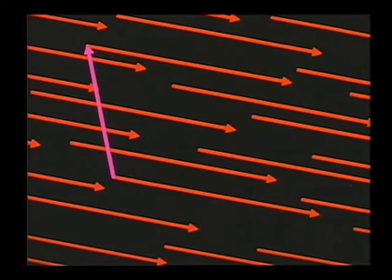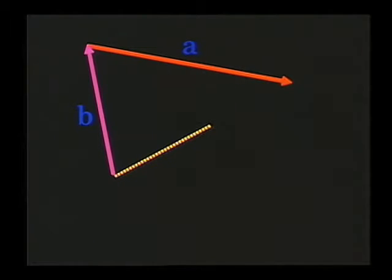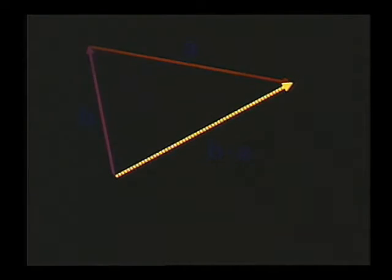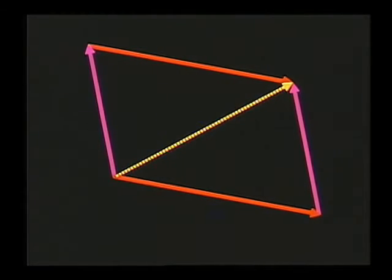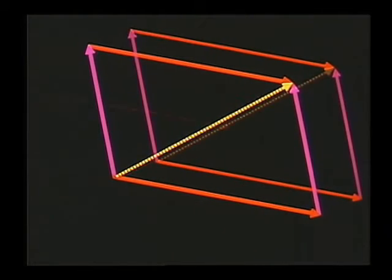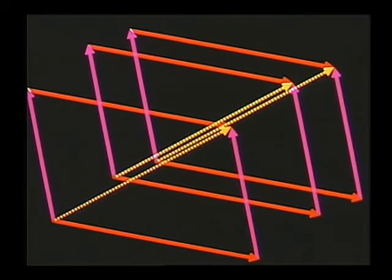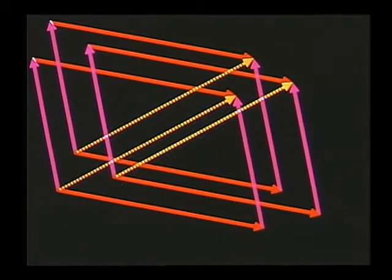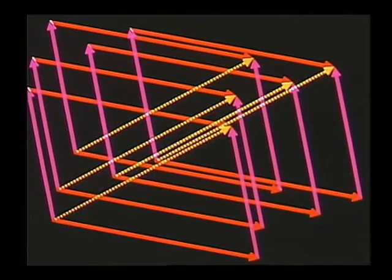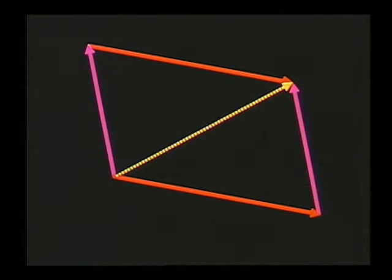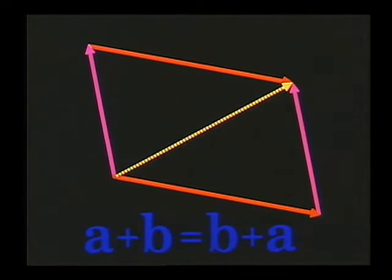The arrow from the tail of the first to the head of the second represents the sum, vector A plus B. Applying this definition to find B plus A, we see that any representative of B plus A is equivalent to any representative of A plus B. Therefore, addition of vectors is commutative.